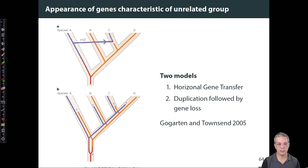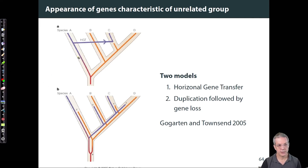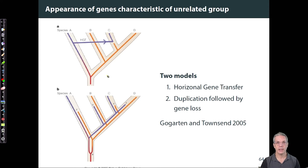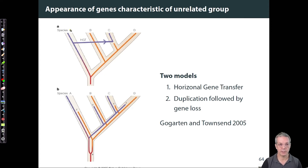And here I'll be using a highlighter to describe some of the outcomes on the trees. We have two trees here, one at the top and one at the bottom. And in both cases, we can use the data set we have about the four species, A, B, C, and D, to infer a tree about them.